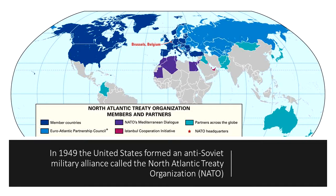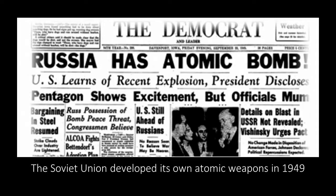Europe was then divided into two different armed blocs crossed by an imaginary line called the Iron Curtain. After the Soviet Union developed its own atomic weapons in 1949, they and the United States emerged as superpowers with massive armies, industrial strength, and nuclear arsenals. There was no doubt that they were the most powerful countries on the planet. Both nations got themselves into a military and geopolitical confrontation called the Cold War.